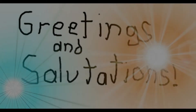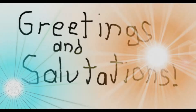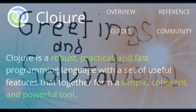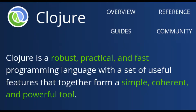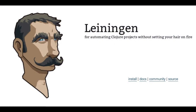Greetings and salutations. Now that Java is installed, we can start programming in Clojure. The easiest way is with Leiningen, the tool for automating Clojure projects without setting your hair on fire.